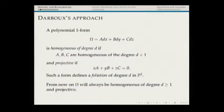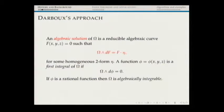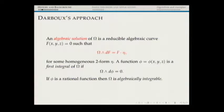Let me remind you of what I mean by algebraic solution. Algebraic solution means omega wedge dF is a multiple of F, where F is the homogeneous polynomial — not necessarily irreducible — that defines the algebraic curve, which is the algebraic solution.